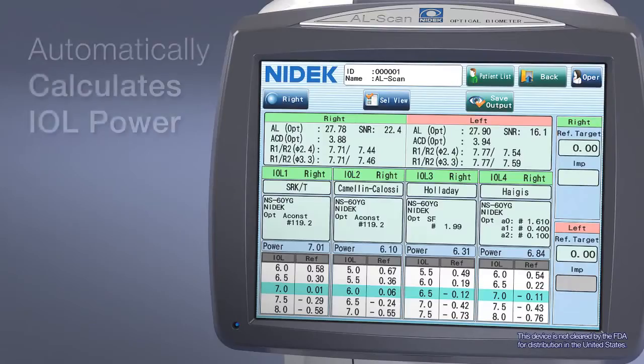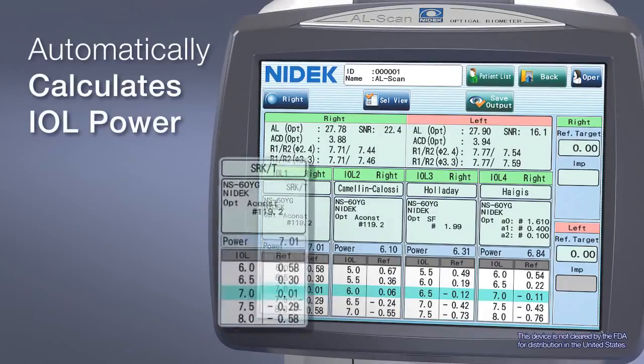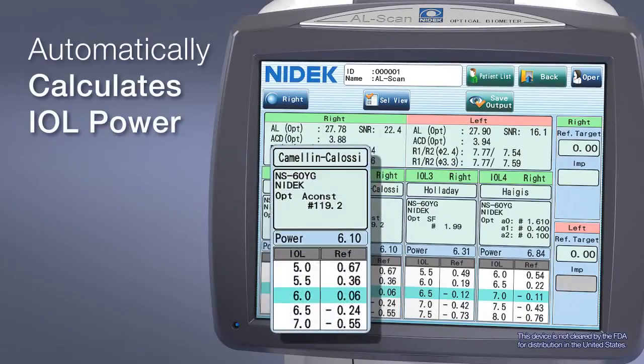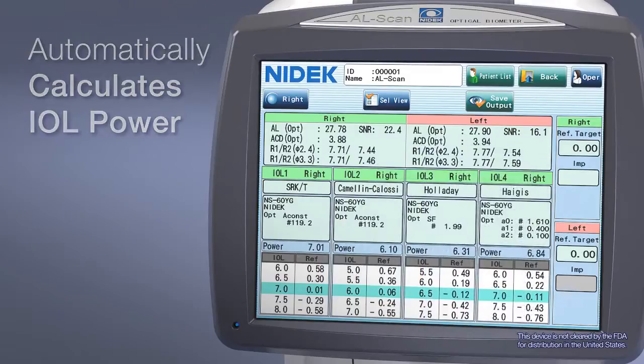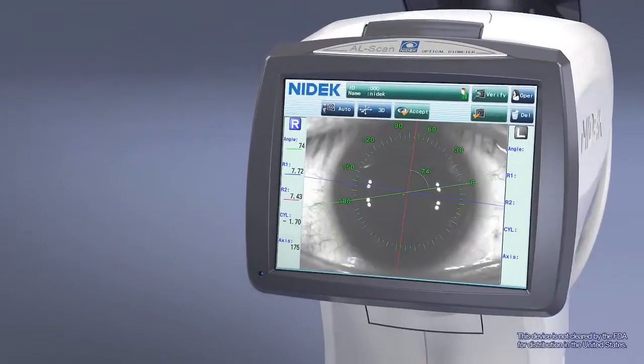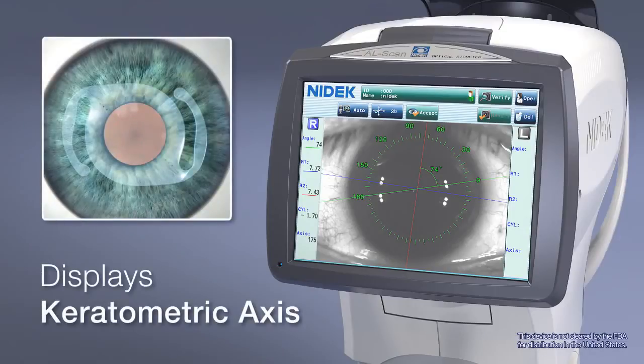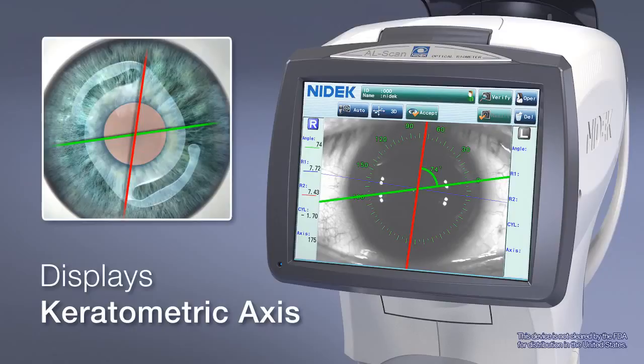The AL-Scan automatically calculates the optimal IOL power using its own measured data without the need for additional equipment. In addition, the keratometric axis is displayed on the eye image to assist with toric-IOL alignment.